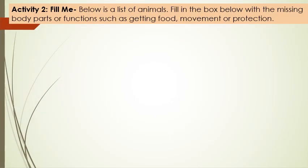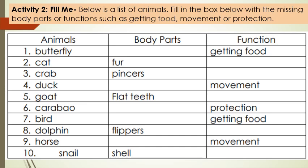Activity 2: Fill Me. Below is a list of animals. Fill in the box below with the missing body parts or functions, such as getting food, movement, or protection. Animals listed: 1. Butterfly, 2. Cat, 3. Crab, 4. Duck, 5. Goat, 6. Carabao, 7. Bird, 8. Dolphin, 9. Horse.